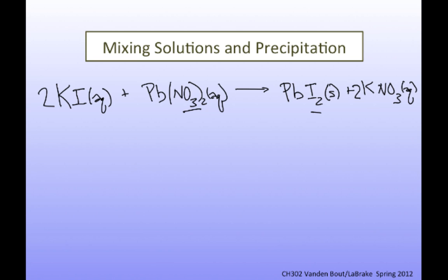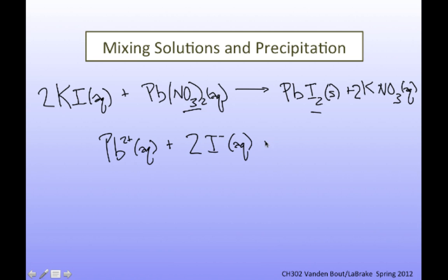This is the full formula unit equation, but we can also see that we've got some spectator ions, which are the potassium and the nitrate. What we're really looking at is the net ionic process: Pb²⁺ (aq) plus two iodides making lead iodide.